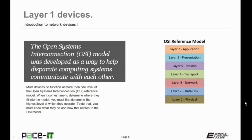It was developed as a way to help disparate computing systems to communicate with each other. The OSI reference model has seven layers. Layer 1 is the Physical Layer, Layer 2 is Data Link, Layer 3 is Network, Layer 4 is Transport, Layer 5 is Session, Layer 6 is Presentation, and Layer 7 is Application.